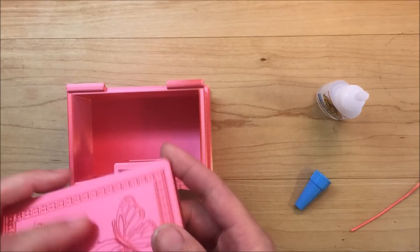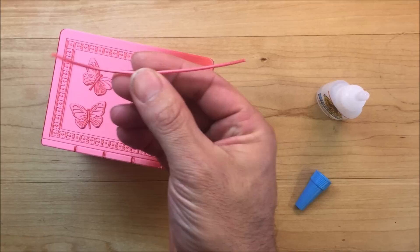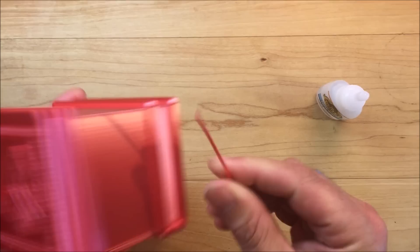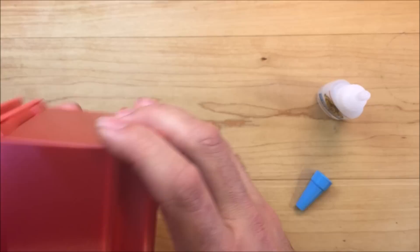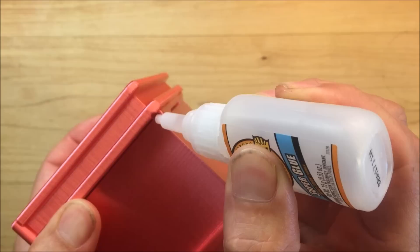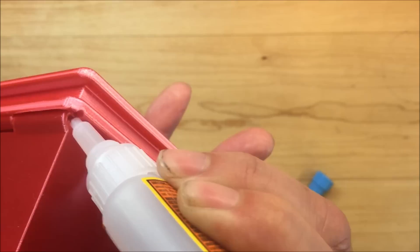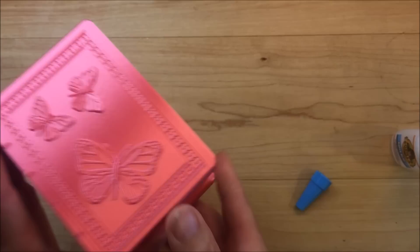To create the hinge, just need a length of filament. Stick it through and you're just going to put a dab of glue on each side to retain the filament. And once that's done, that will complete the assembly of the secret box.